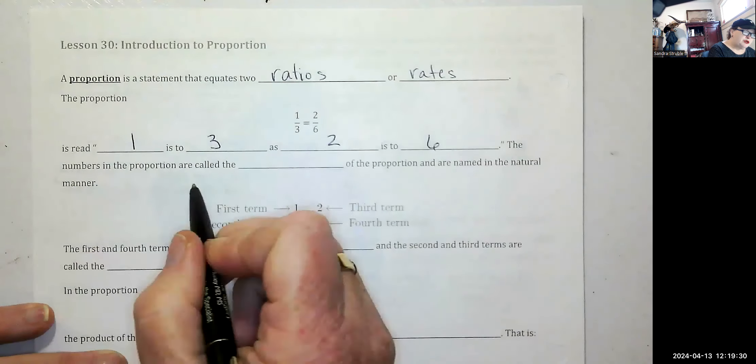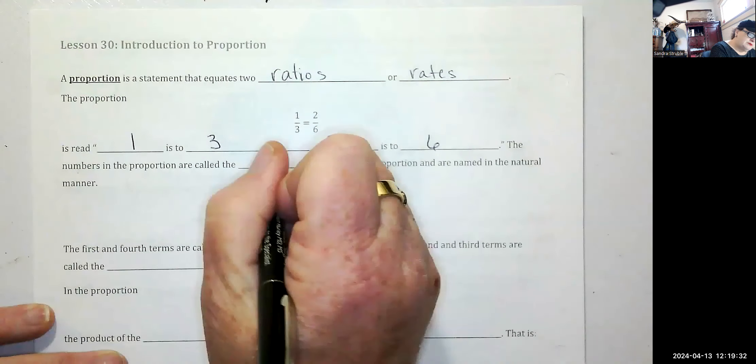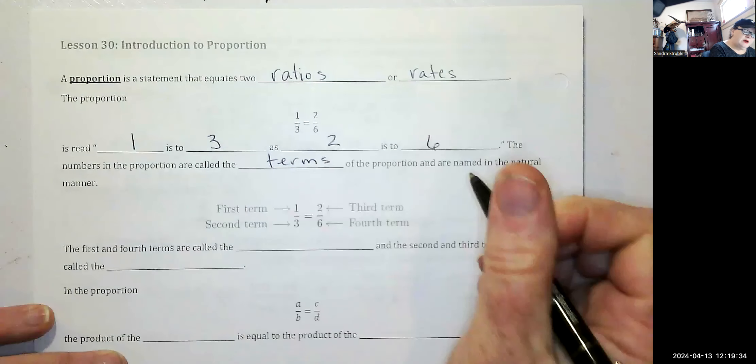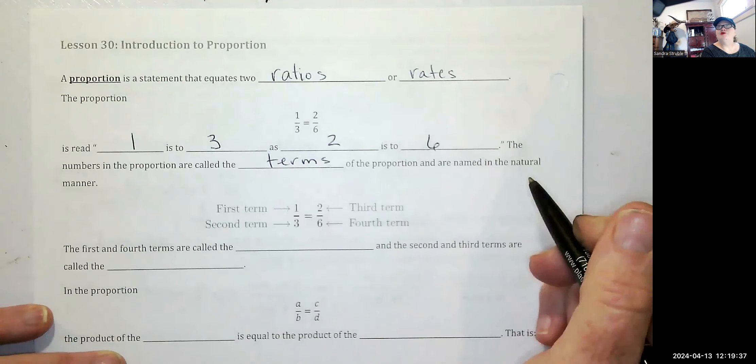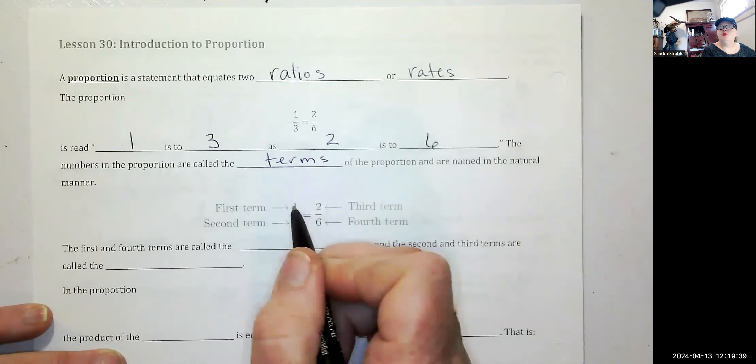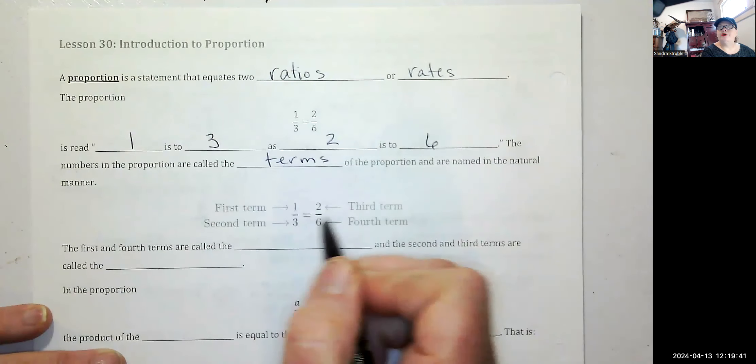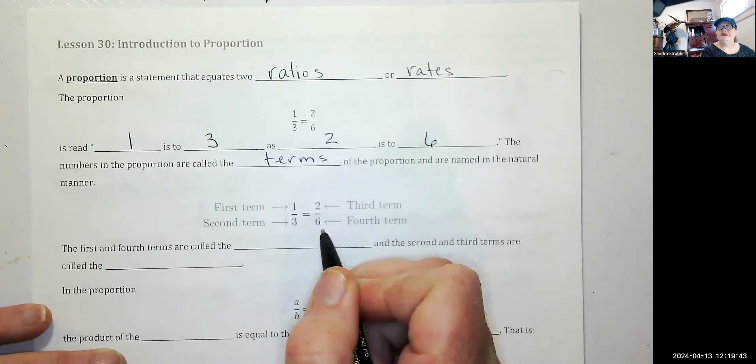The numbers in the proportion are called the terms of the proportion and are named in the natural manner. The first term is one, the second term is three, the third term is two, and the fourth term is six.